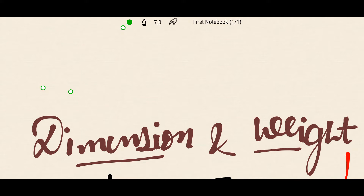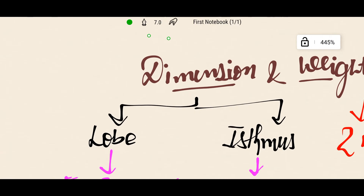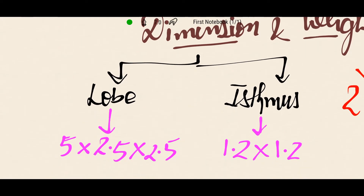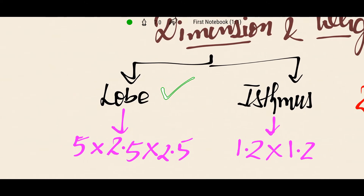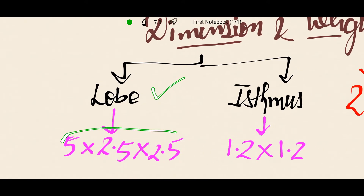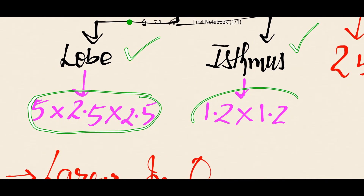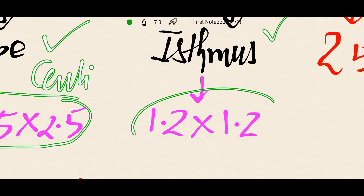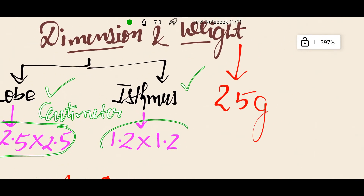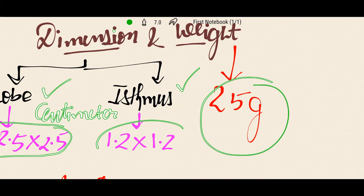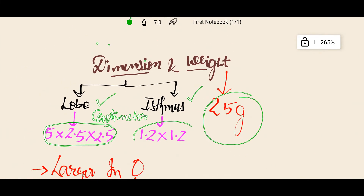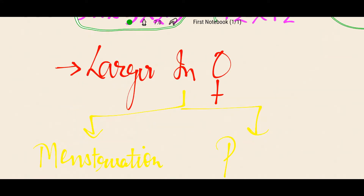The dimension of each lobe is 5 × 2.5 × 2.5 cm, and the dimension of the isthmus is 1.2 × 1.2 cm. All measurements are in centimeters. The weight of the entire gland is 25 grams.